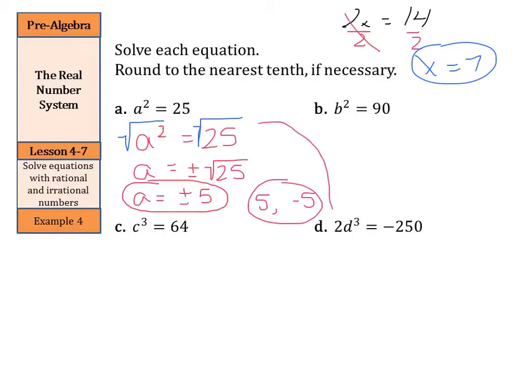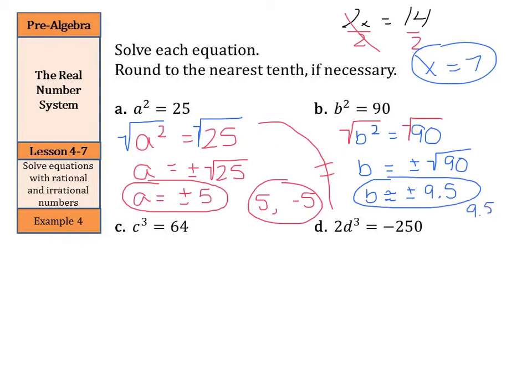Now, when I look at B, if I have b² = 90, I again can take the square root of both sides, and b is going to equal plus or minus the square root of 90. And if we use our calculator, we would get b equals plus or minus about 9.5. So this is going to be an approximation now. And so we can write our answer b is about equal to plus or minus 9.5, or you could again list it 9.5 and negative 9.5. Either way works.